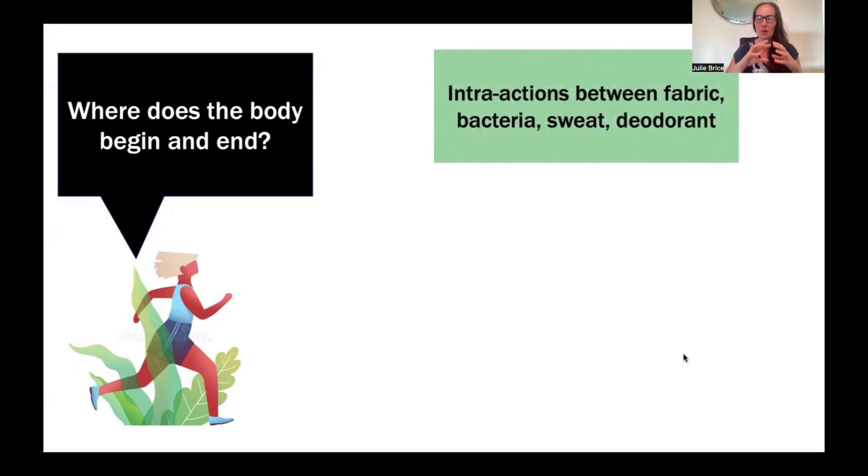The first was looking at intra-actions between fabric, bacteria, sweat, deodorant on a woman's body. Each woman, as she's exercising, is going to sweat. That sweat is very unique to each person depending upon what they're doing, their body size, their genetics, their hormones. Where they sweat is really dependent upon their own unique body. When the woman begins to sweat, that sweat interacts with the sports bra. It becomes part of the sports bra, has a pattern of that sweat in the fabric itself. Each person also has their own bacteria, and that bacteria gets transferred onto the sports bra that interacts with the sweat to create new bacteria.